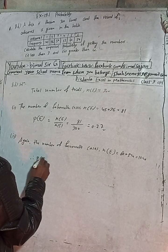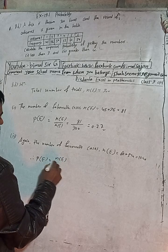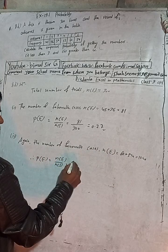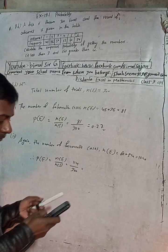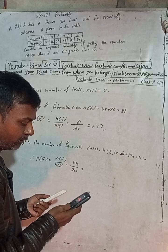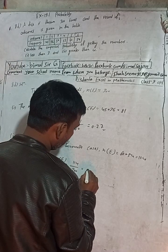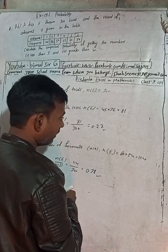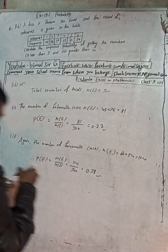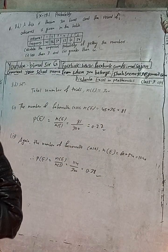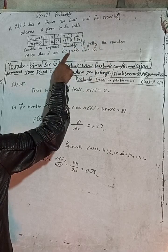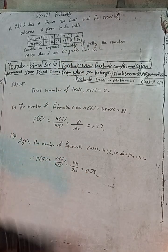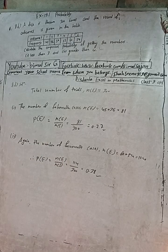Now probability P(E) = n(E) ÷ n(S) = 114 ÷ 300 = 0.38. The answer is 0.38. If you want to write it as a sentence: 'The empirical probability of getting the number greater than 4, P(E) is equal to 0.38.' Dear subscribers, viewers, and students, this is the solution for question 8D.